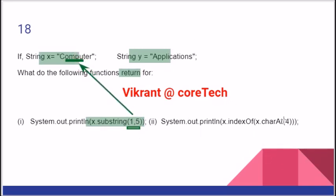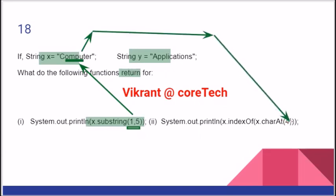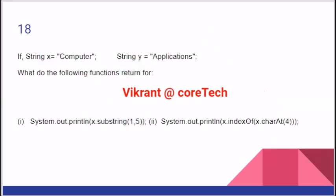Let us see what we have at charAt(4). Indices 0, 1, 2, 3, 4 — so we have U at charAt(4). What is the index of U in X? We might have cases like 'banana' or 'pineapple' where characters are repeated. Right now the index of P will be 4. So not a very tricky one.